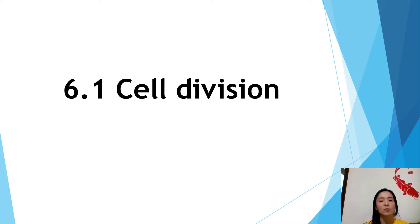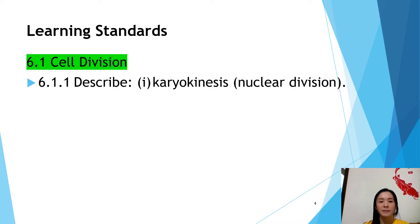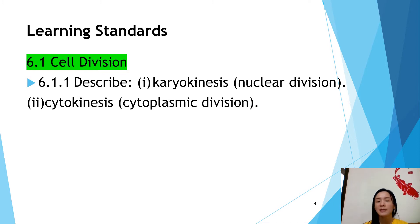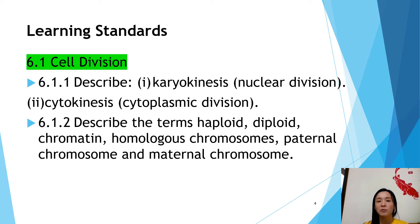We look at 6.1 cell division. The learning standard for this subtopic: at the end of this subtopic you should be able to describe karyokinesis, which is the nuclear division, cytokinesis, which is cytoplasmic division, and you should be able to describe the terms haploid, diploid, chromatin, homologous chromosome, paternal chromosome, and maternal chromosome.